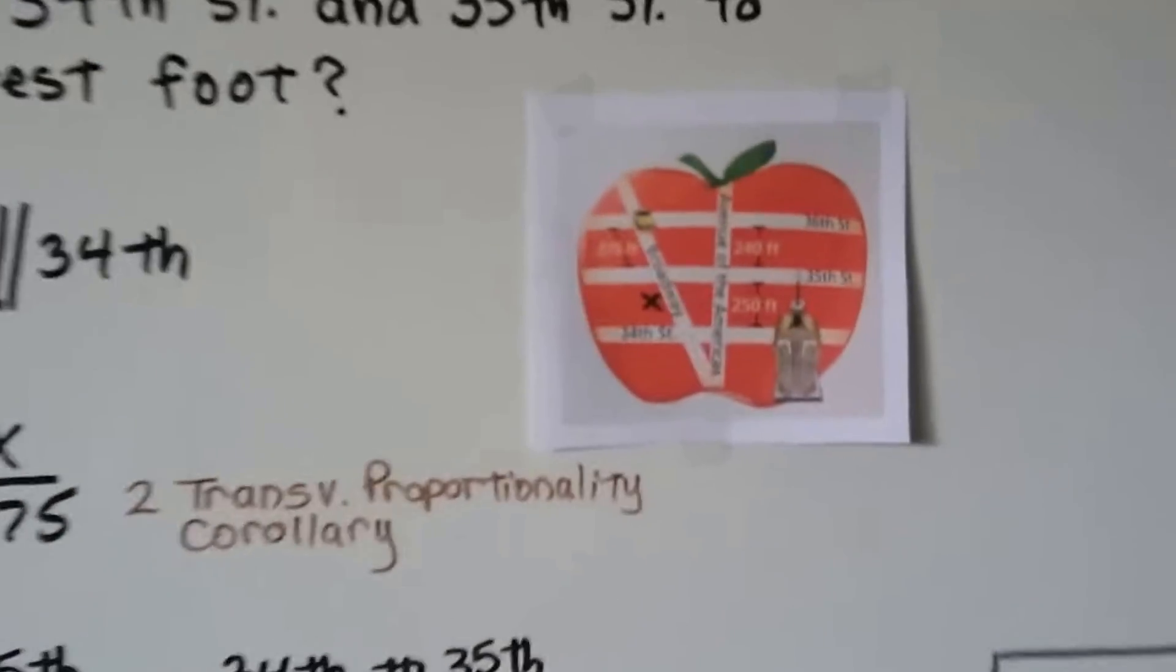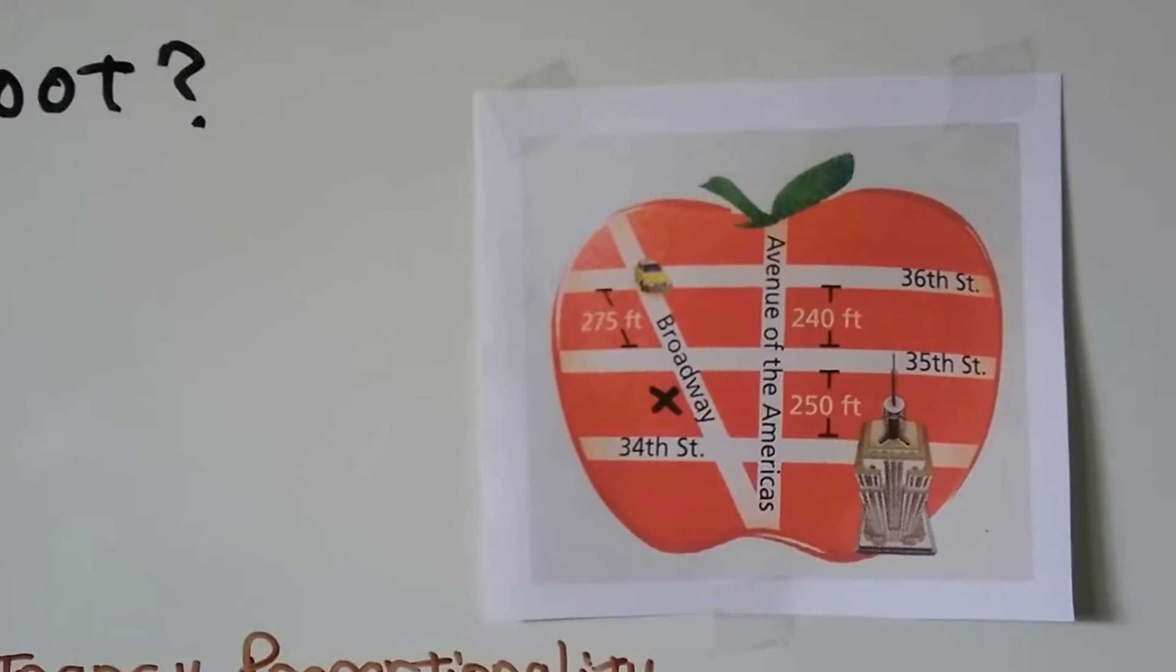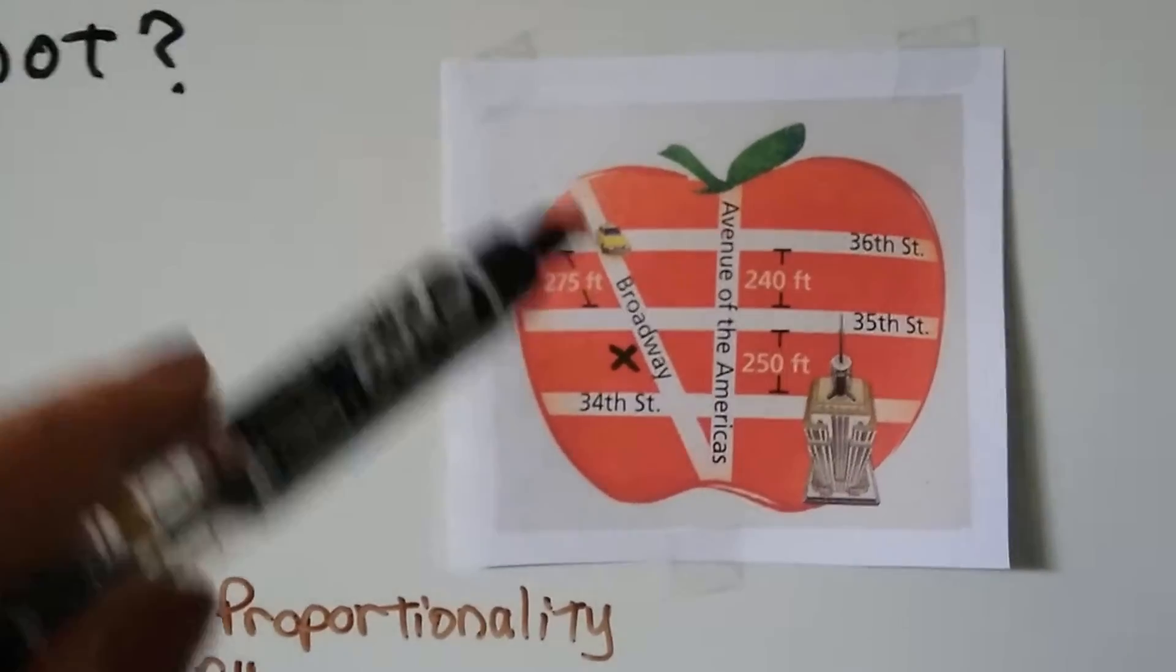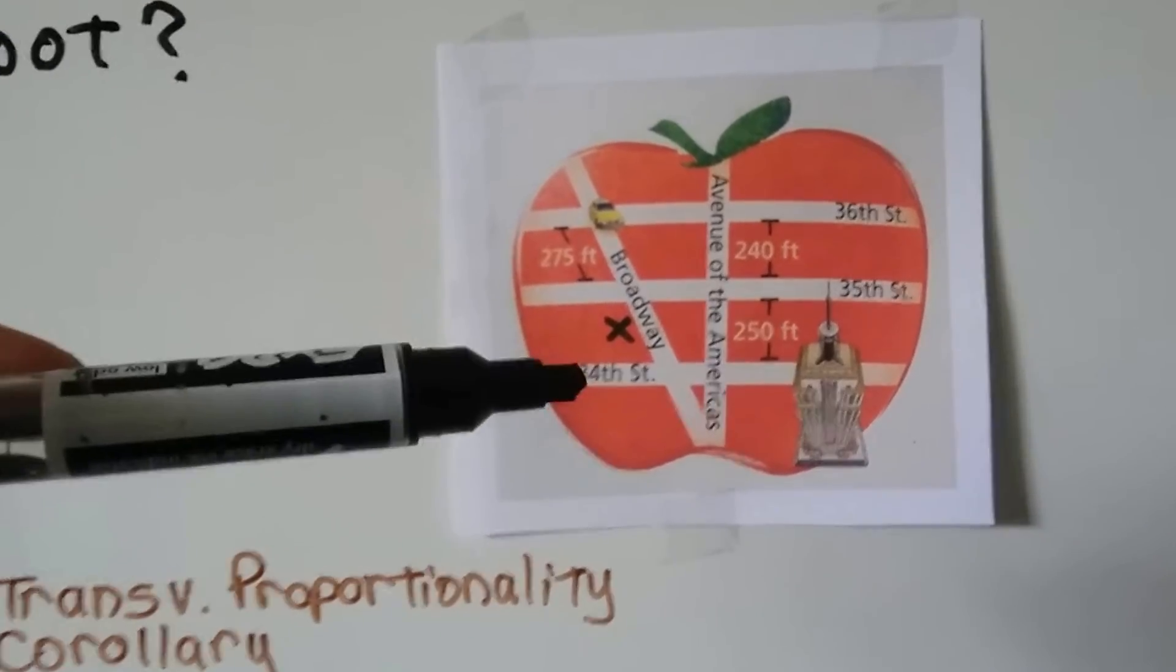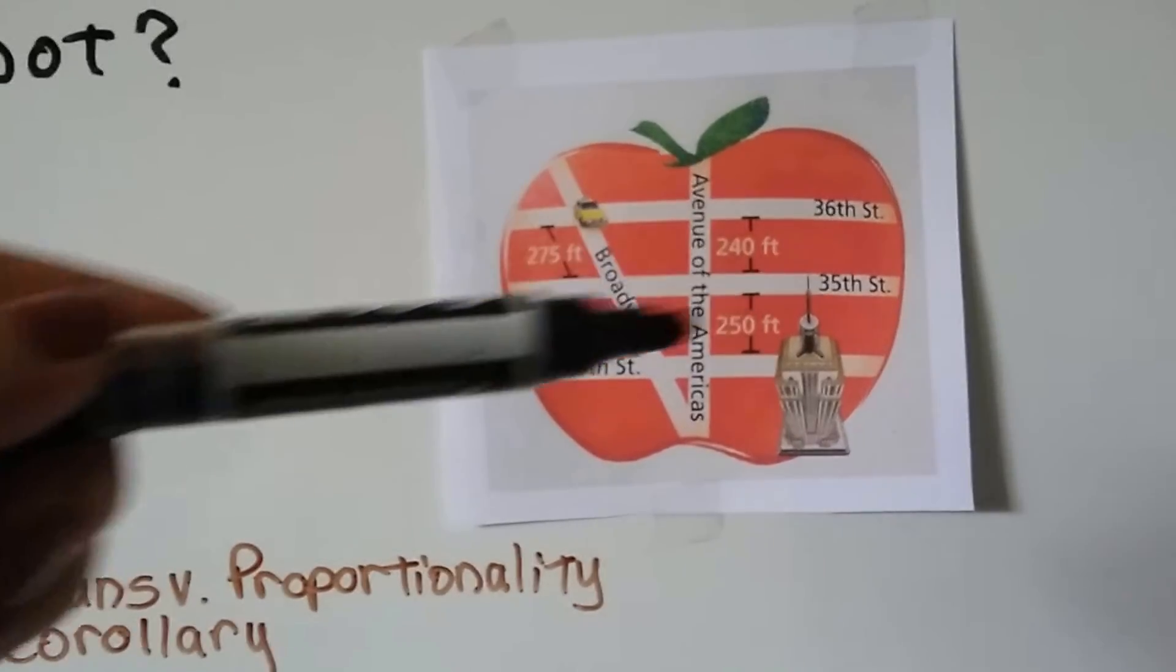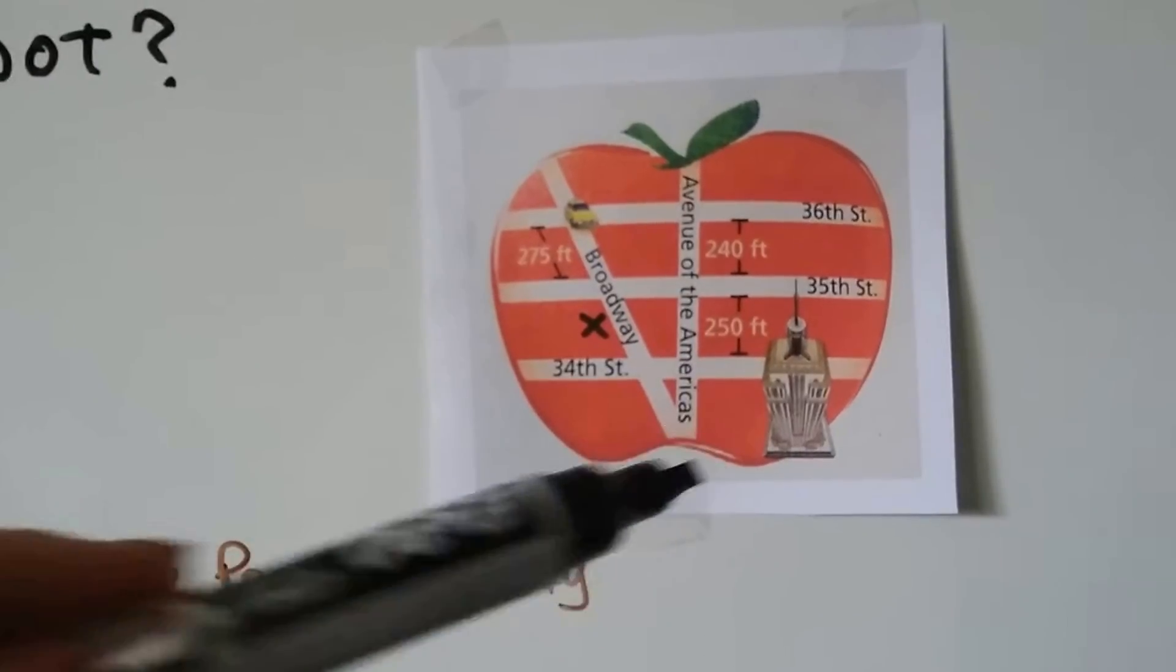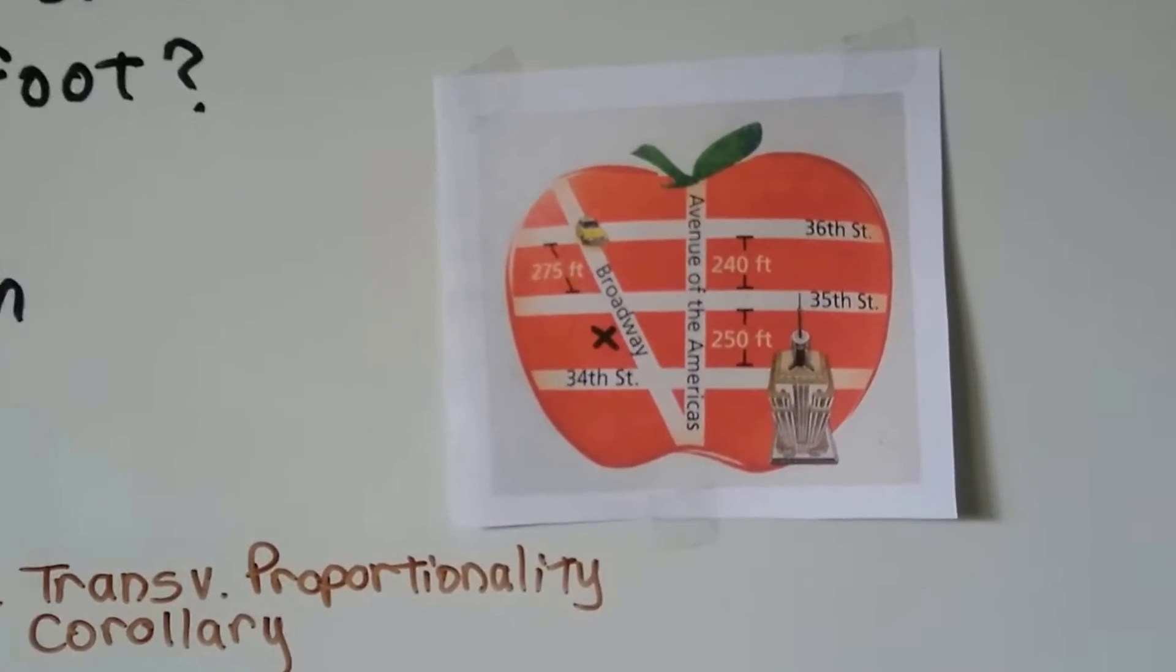Now take a look at this diagram. This is the map of an area in Manhattan in New York City, and the approximate length of several streets. So here's Broadway. Here's Avenue of the Americas, and we have numbered streets, 34th, 35th, 36th, that cross through them. So it would be Broadway and Avenue of the Americas would be the transversals, and the 36th, 35th, and 34th streets would be the parallel lines.